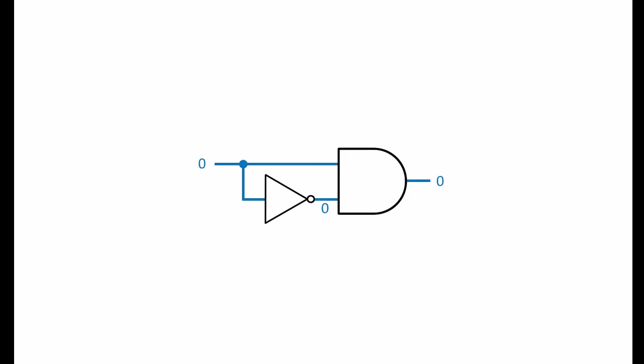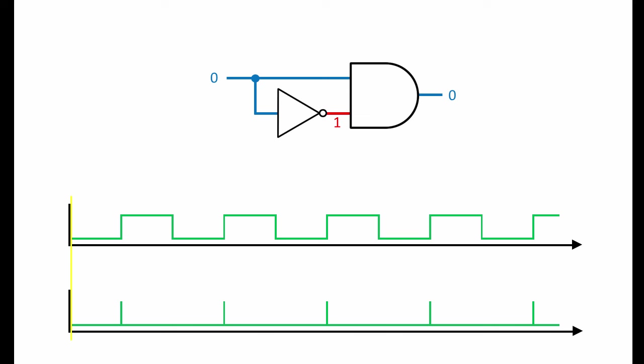Similarly, when the input transitions from high to low, there's another very brief period in which the NOT gate must catch up. But notice that this doesn't affect the output of the AND gate. What we have here, then, is a device that can detect the very brief instant at which an input rises from low to high. The top chart shows a clock signal being applied to the input, and the lower chart shows the corresponding output. The output of this circuit is low most of the time, but when the input changes from low to high, there's a very brief moment in which the output of the NOT gate lags behind its input, so momentarily the output of this circuit is also high. We've isolated just the rising edge of the clock cycle — this is a positive edge detection device.